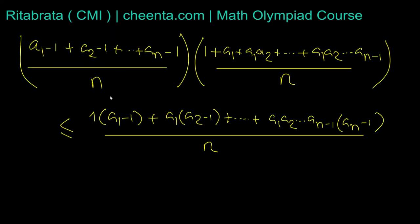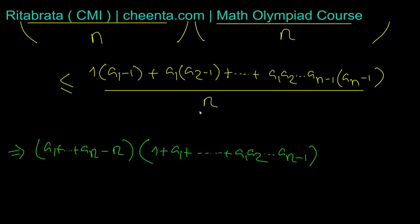We can see how to use the second sequence. Now write them in a more neat form. What is the left term? We have a₁ + ... + aₙ, and 1 is subtracted n times, so this is minus n, into this quantity: 1 + a₁ + ... + a₁a₂...aₙ₋₁. This is less than or equal to n times [1·(a₁ - 1) + a₁(a₂ - 1) + ... + a₁a₂...aₙ₋₁(aₙ - 1)].